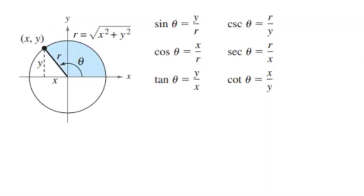The reciprocal is just taking your fraction a over b and flipping it over to b over a. Now, before we look at them, we have to remember that the trig functions only exist in this specific scenario where we have an angle drawn in standard position and a circle centered at (0, 0). The angle takes us to a terminal ray, and that terminal ray intersects our circle at a point (x, y). x squared plus y squared equals r squared, so r is the square root of x squared plus y squared.